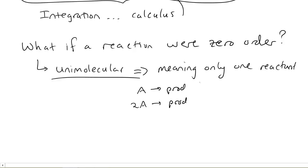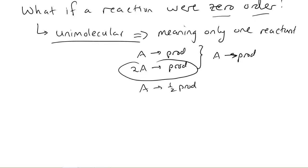And what I'm going to recommend is that you look at this from the point of view that you can convert anything into A goes to products. Because for this one right here, which has 2A, we could just make this A goes to one half of a product. So we're going to deal with unimolecular reactions, and we're going to ask questions like, what if that unimolecular reaction were zero order?